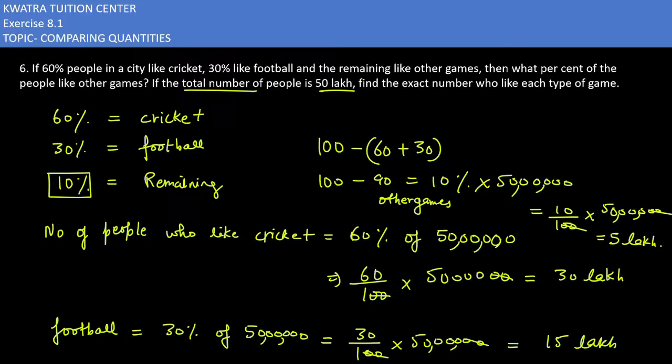The number of people who like cricket is 30 lakh. Number of people who like football is 15 lakh. And number of people who like other games are 5 lakh.